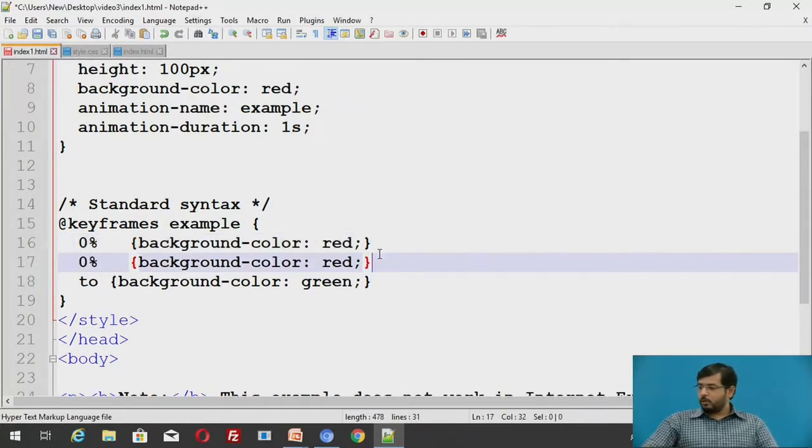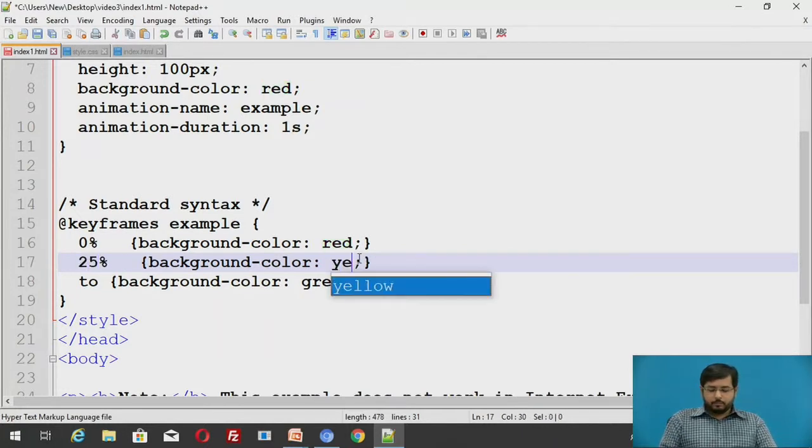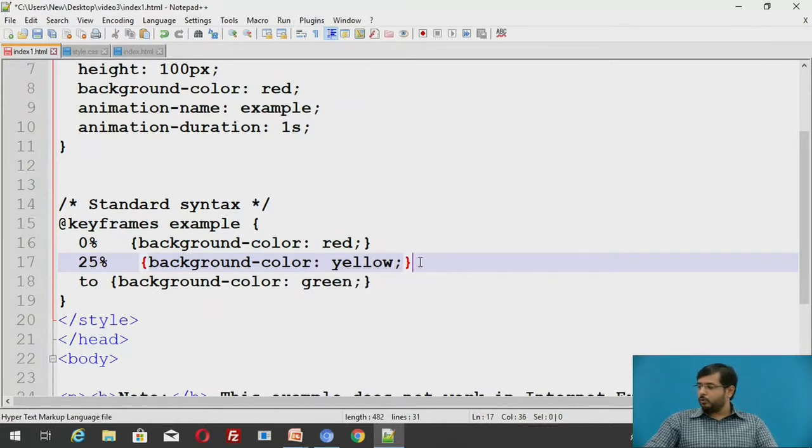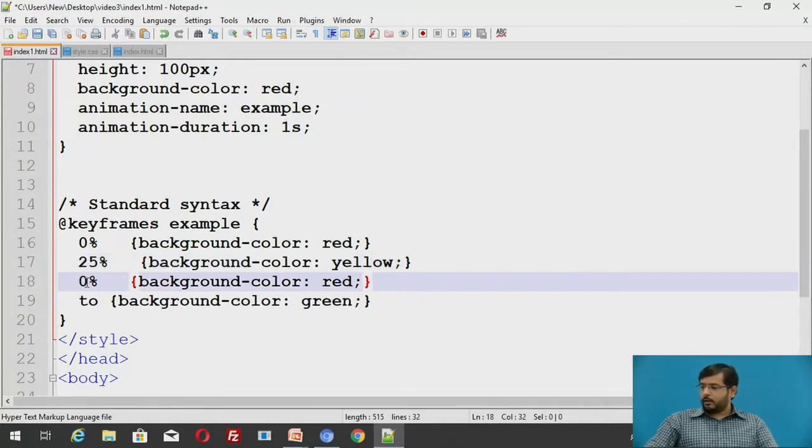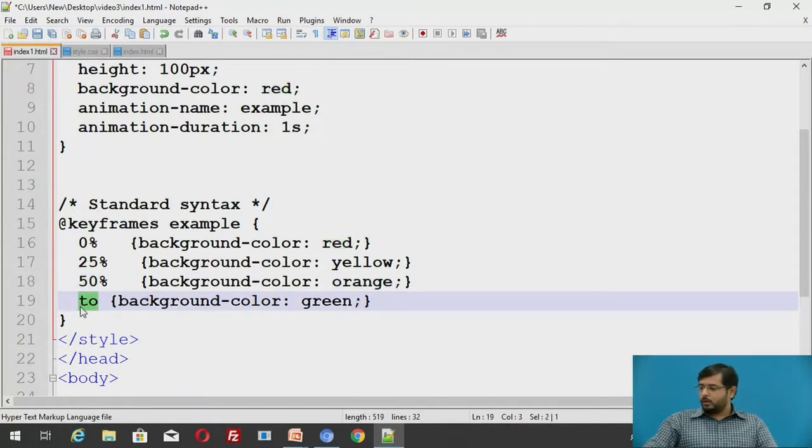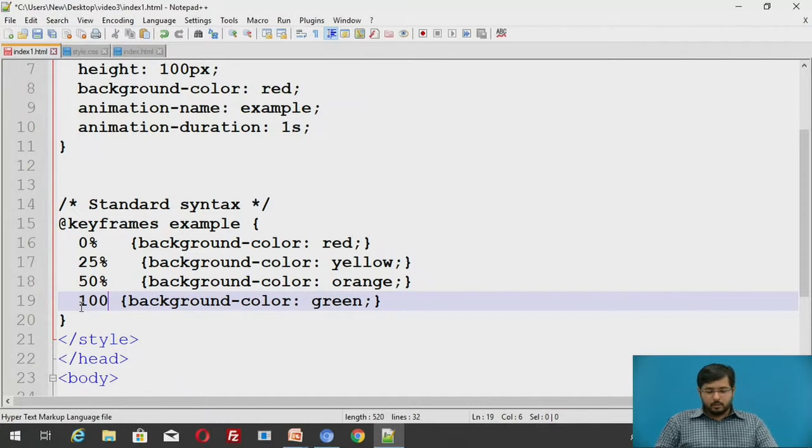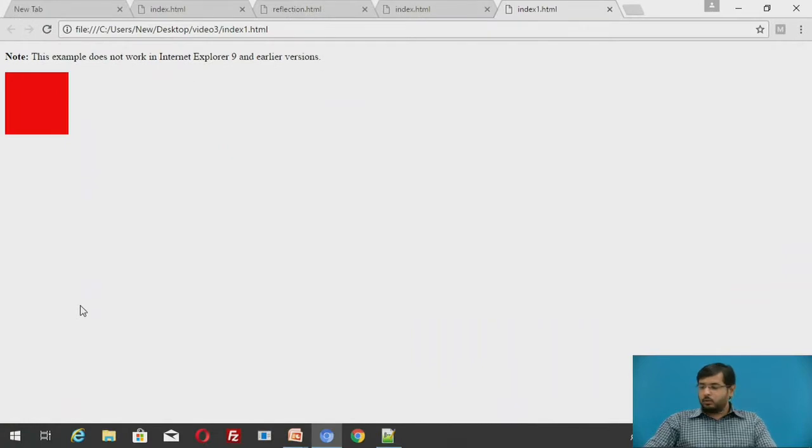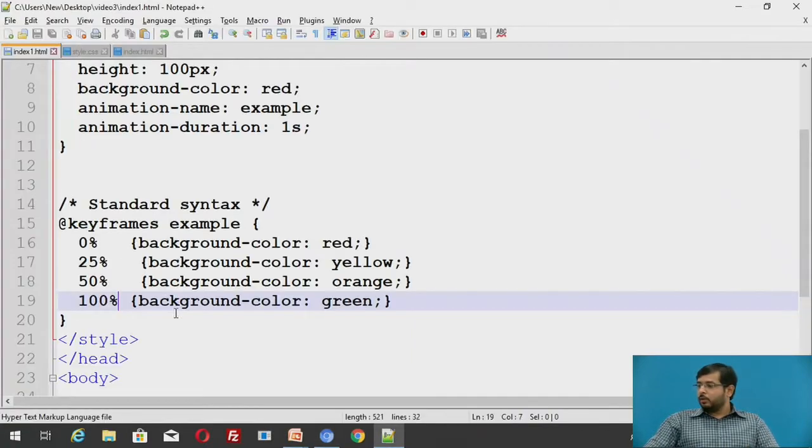Now, we can also give it like at 0% this particular element will have red. At 25% this will be yellow. At 50% this will be orange. And at 100% it will be green and it will change back to red.